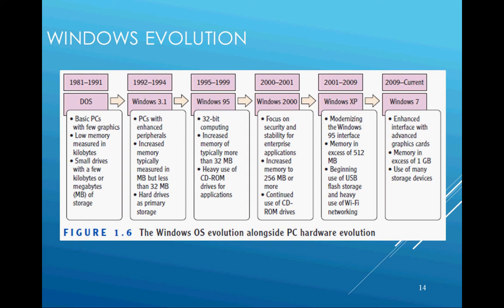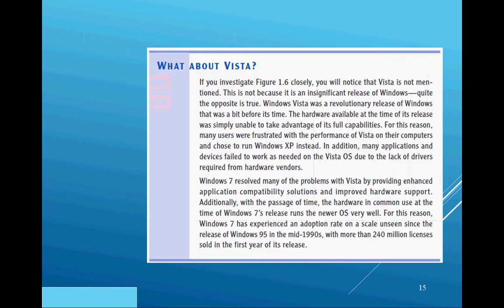What happened to Vista? Vista was kind of ahead of its time, so the hardware was not able to keep up with it. Many have said that Windows 7 is Windows Vista as it should have been when first released, because by the time Windows 7 arrived we had much better, faster, and more capable hardware.